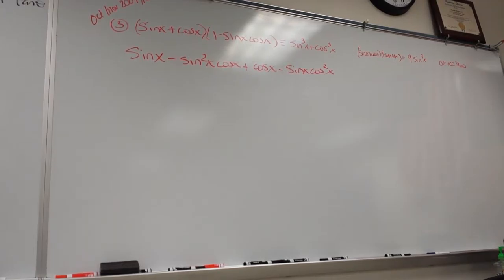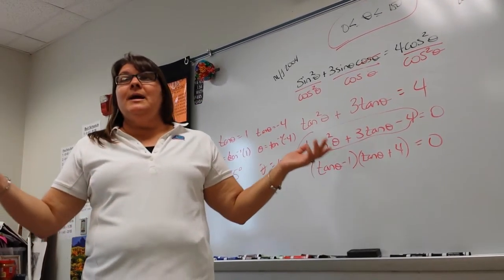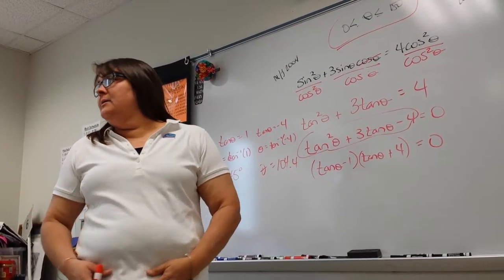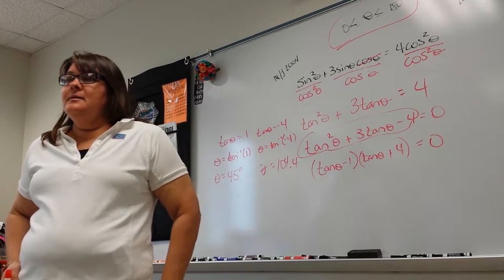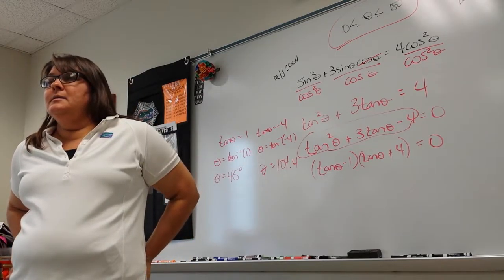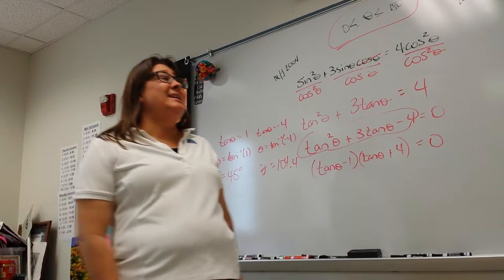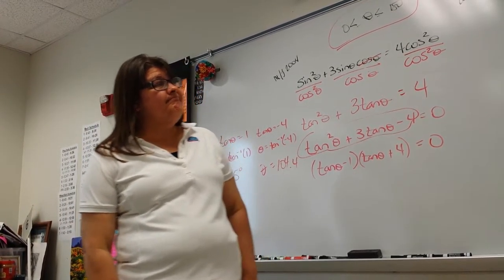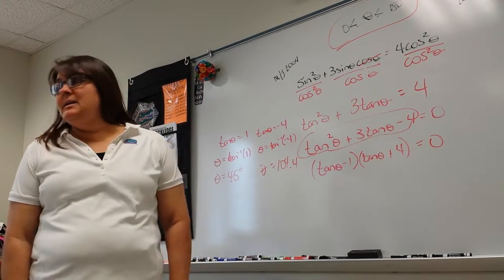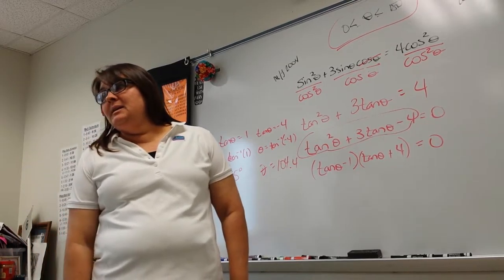This is where fourth or fifth period got stuck — we were at a point of 'what do I do now?' Students suggest an identity, but you can't use sine squared plus cosine squared directly because it's just sine plus cosine, not sine squared plus cosine squared.